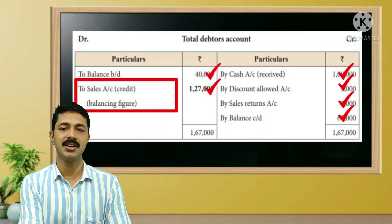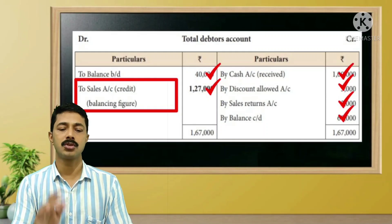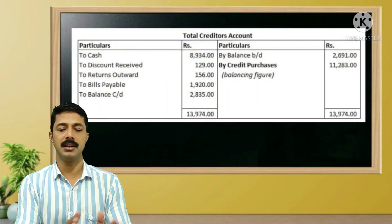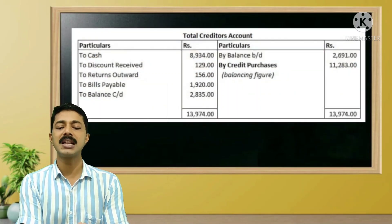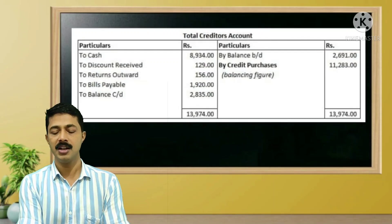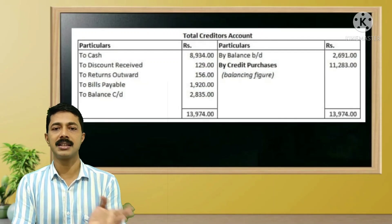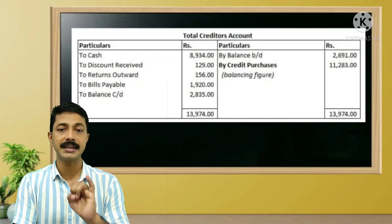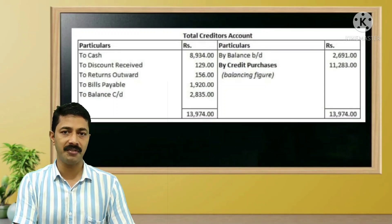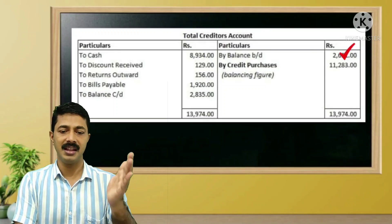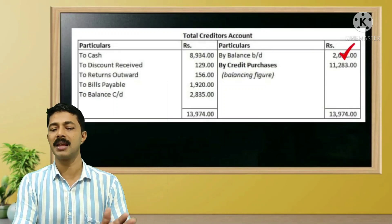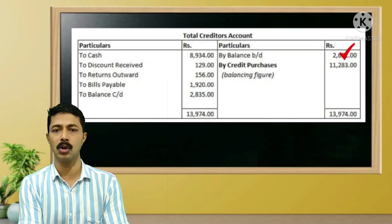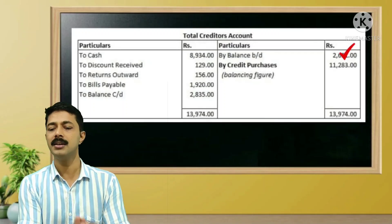We are ready to get the total debtors account. Then this is the total creditors account in the format. Total creditors account is ready to get the credit purchases. This is the opening balance of creditors — creditors carry a credit balance.